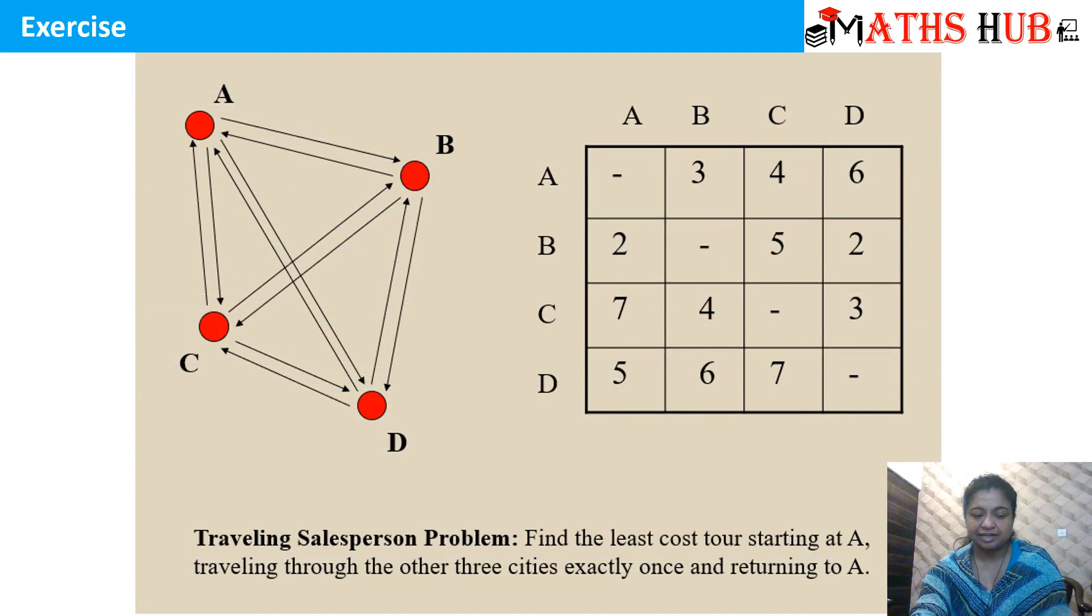You can try this exercise. A problem is given to us. And the distances are marked in this table. So you have to find out the least cost tour starting at A and also returning at A. Again, by the same method, you can find out all the permutations from city A to city A. And from all those permutations, you can find out the minimum distance. Try this problem and write to me in the comment section.